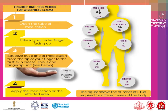The fingertip unit method is used for eczema. Open the tube of medication and extend your index finger facing up. Squeeze out a line of medication from the tip of your finger to the first skin crease — this is one fingertip unit. Apply the medication on the affected area.